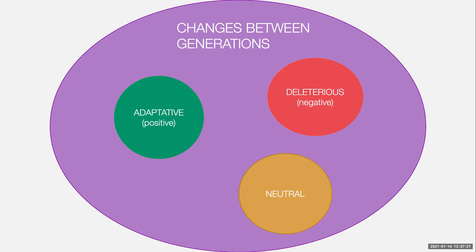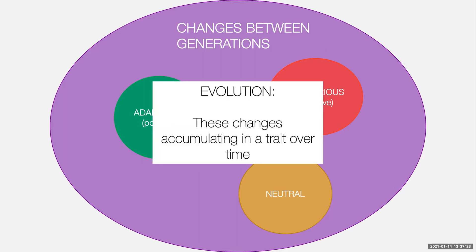When we're talking about mutation in the context of phylogenetics, we're not usually that interested in where along the genome mutations are happening. And all of these three types of change between generations is evolution. It's these changes accumulating in a trait over time. So it's just to really emphasize that adaptation and evolution are not the same thing. Adaptation is one specific type of evolution.